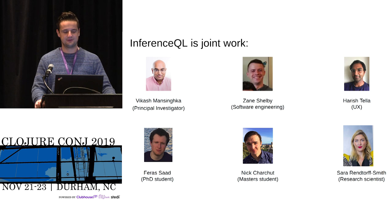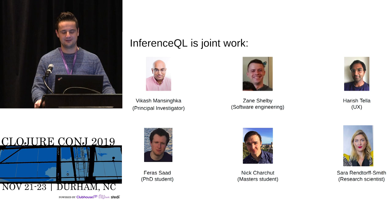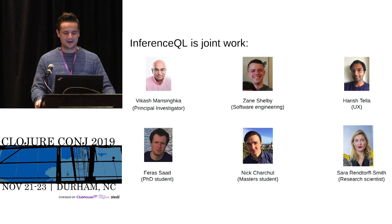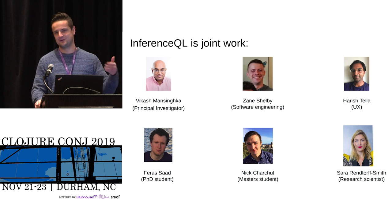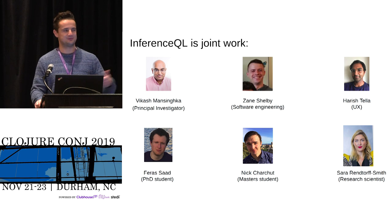Vikash is the principal investigator. I would like to call out Zane, who is here today — he's leading our software engineering efforts and taps me on the finger if I do crazy science code writing. Harish Tella is also here doing our UX. Both of them have been doing Clojure much longer than I have. So if you have detailed questions on Clojure, please refer to them. Anything about the probability stuff, I'm happy to answer.